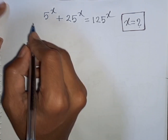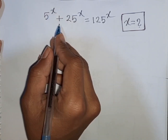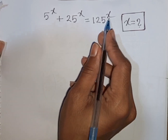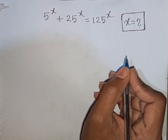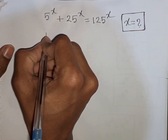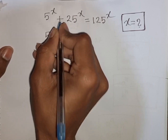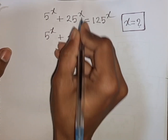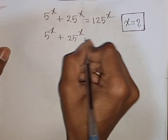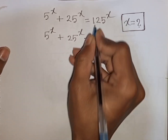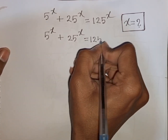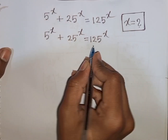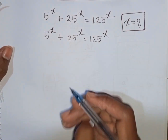How to solve 5 power x plus 25 power x is equal to 125 power x. Find the value of x. We divide both sides by 125 power x.